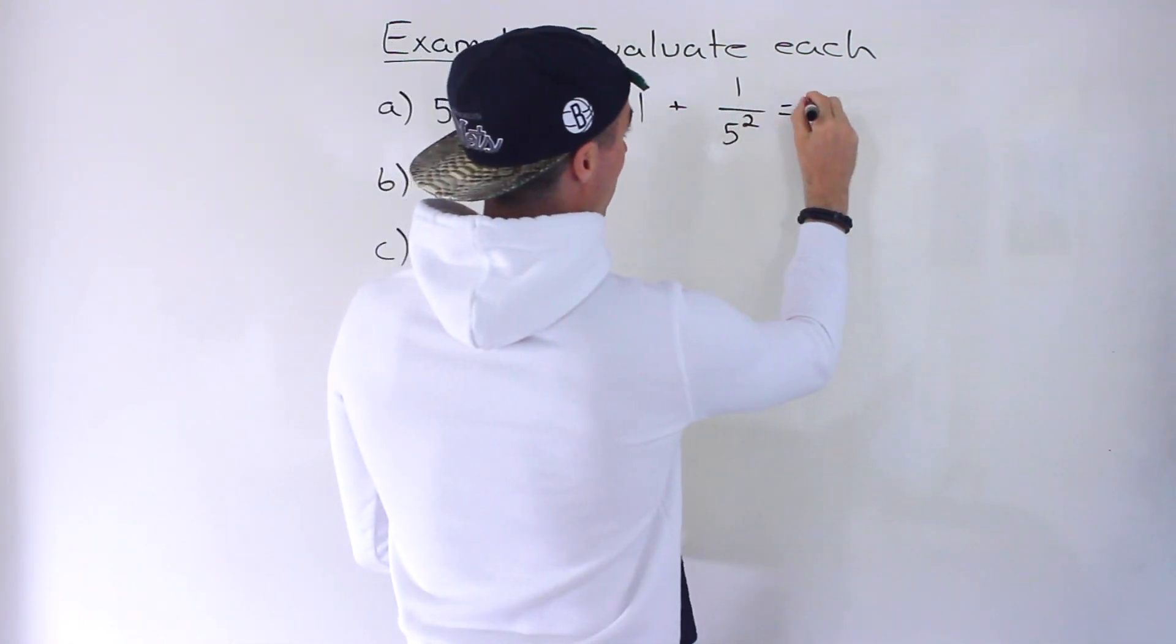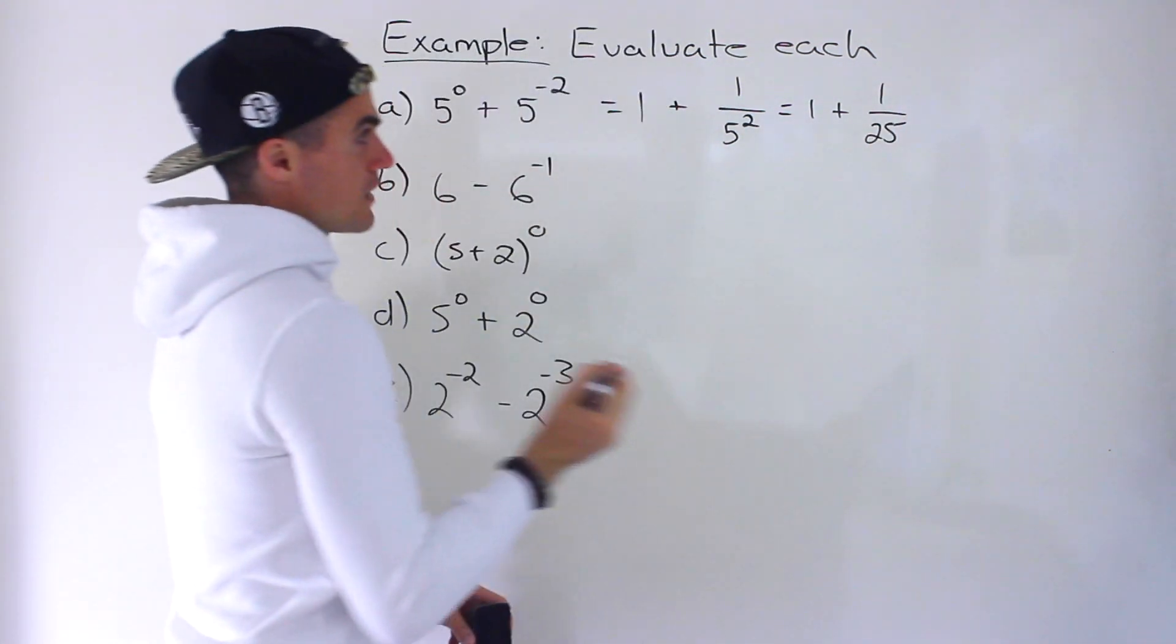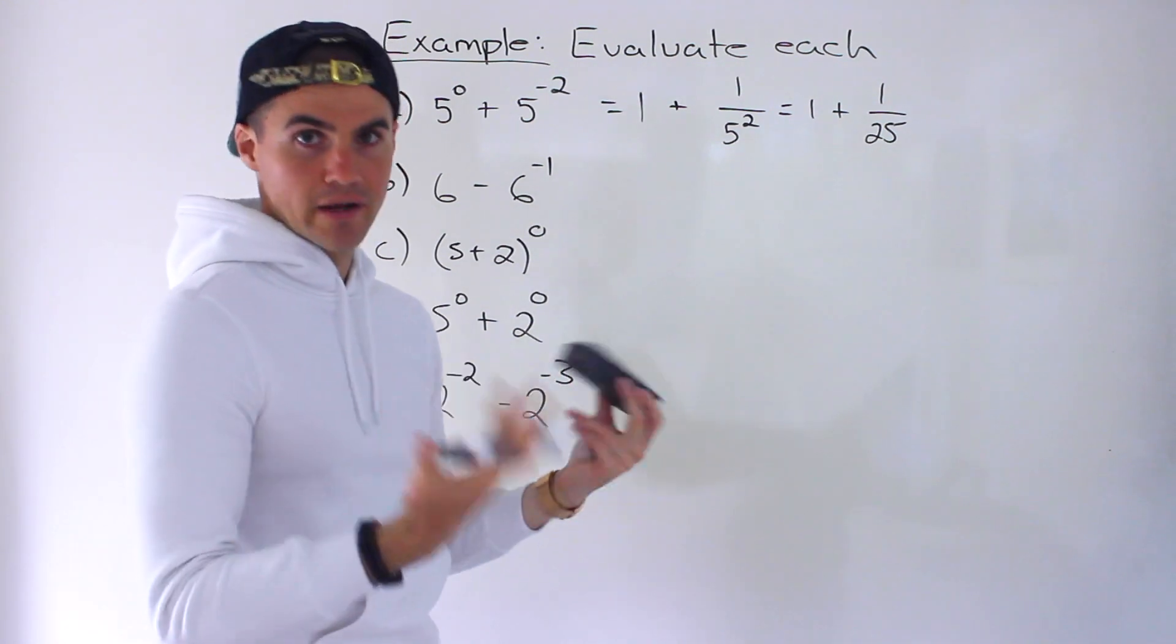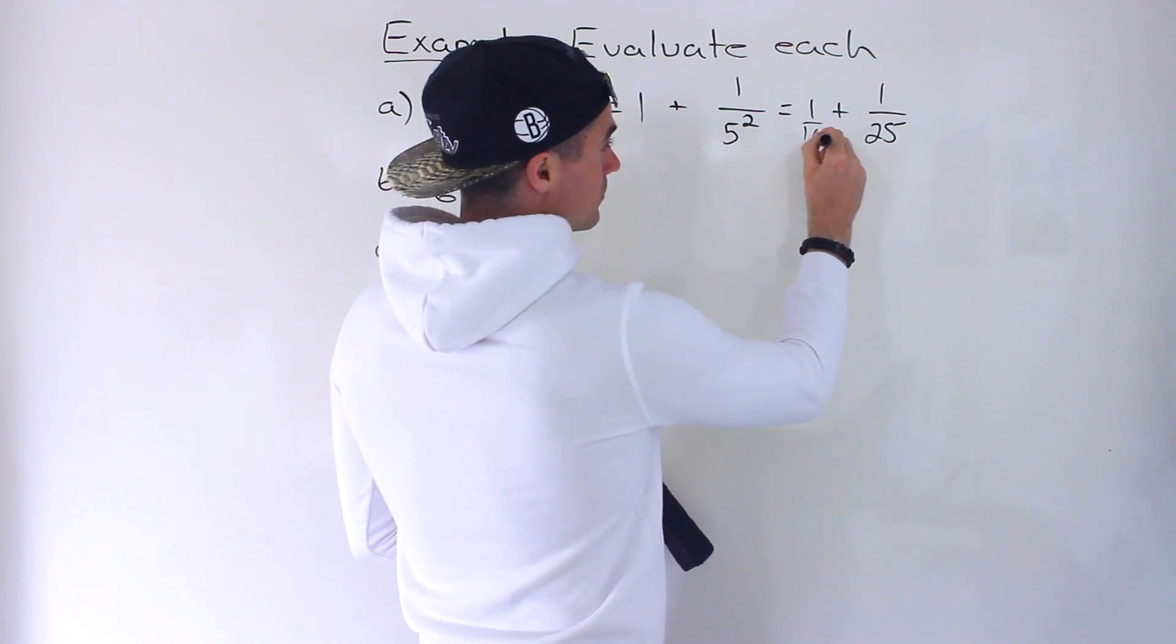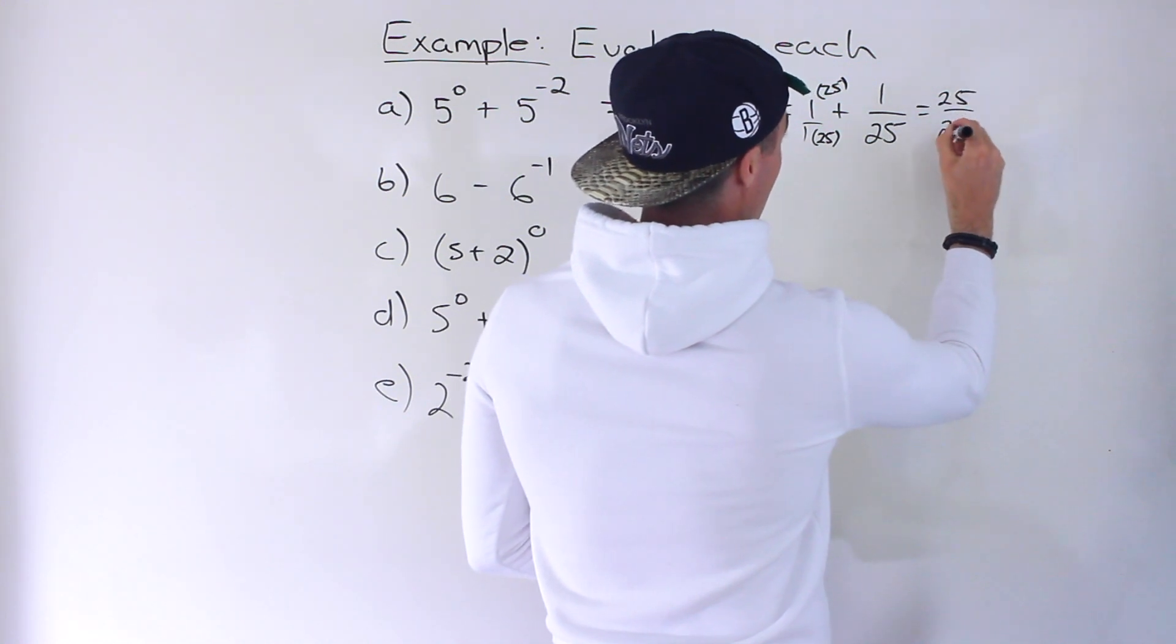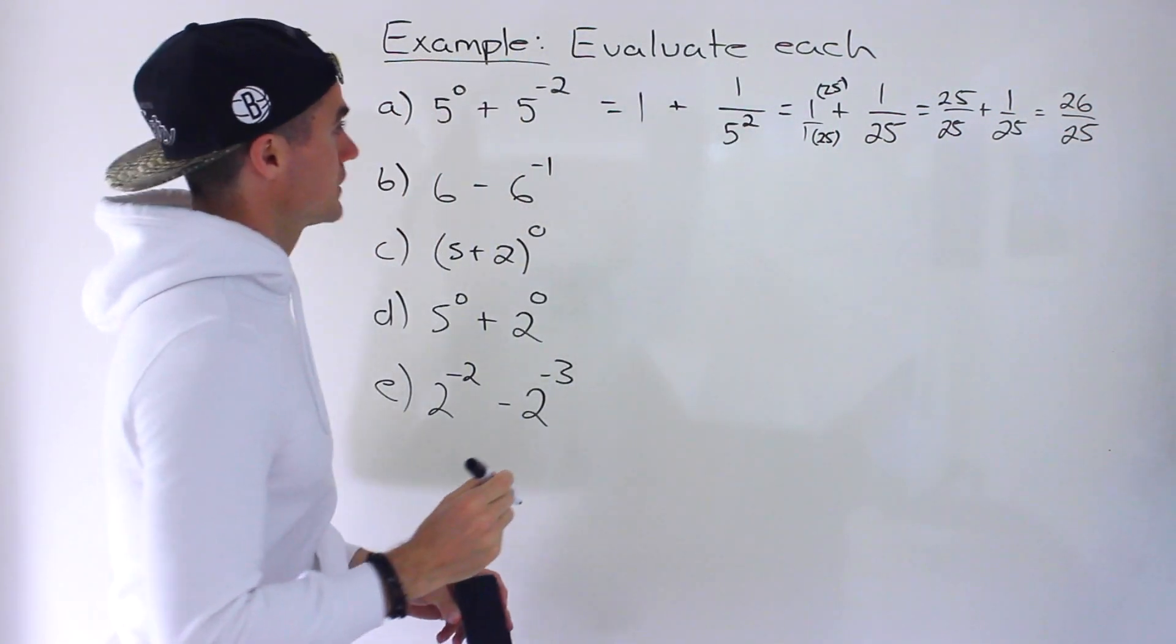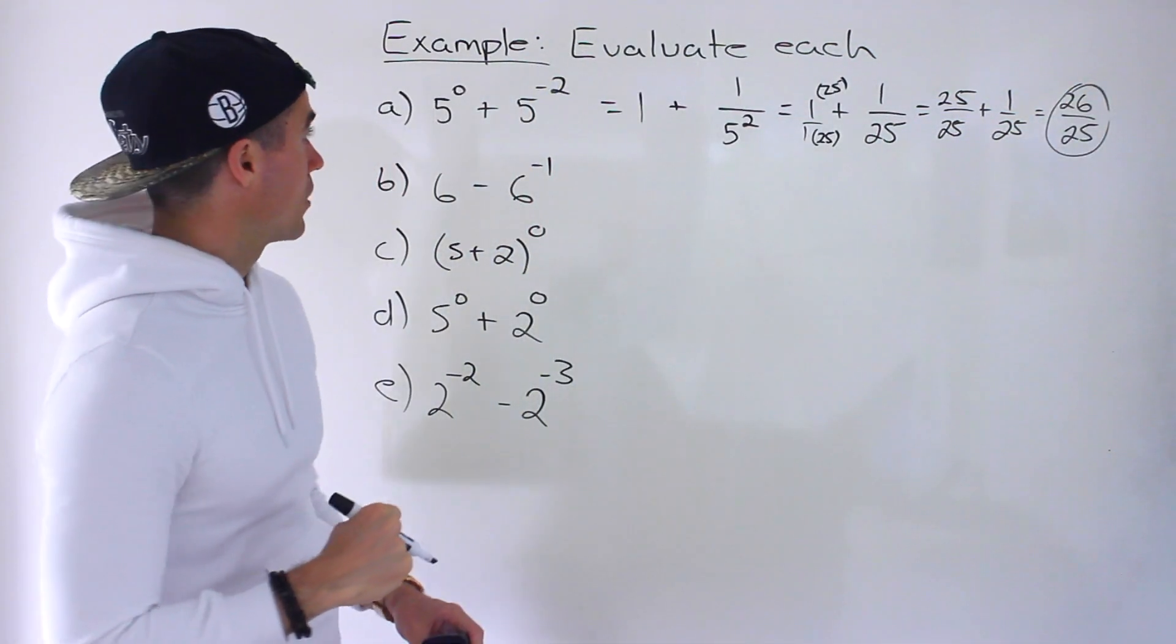And then from here we can evaluate it. So we'd still have that 1 plus, we still got to do this exponent. So we'd have 1 over 25. So 5 to the power of negative 2 is the exact same as 1 over 25. And now notice that we have it as just a regular fraction. So we could add these by getting a common denominator, multiply this by 25, multiply this by 25. So we'd have 25 over 25 plus 1 over 25, which would give us 26 over 25. So that right there ends up being the answer to part A.